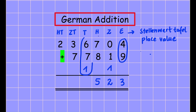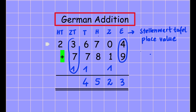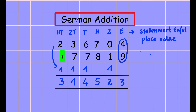Now we have 6 plus 7 plus 1 is 14, so write 4 here and carry a 1. Then 3 plus 7 plus 1 is 11, so write 1 and carry a 1. And finally 2 plus 1 is 3, and it's finished. The result in German is 314,523 — that's how we do German addition.